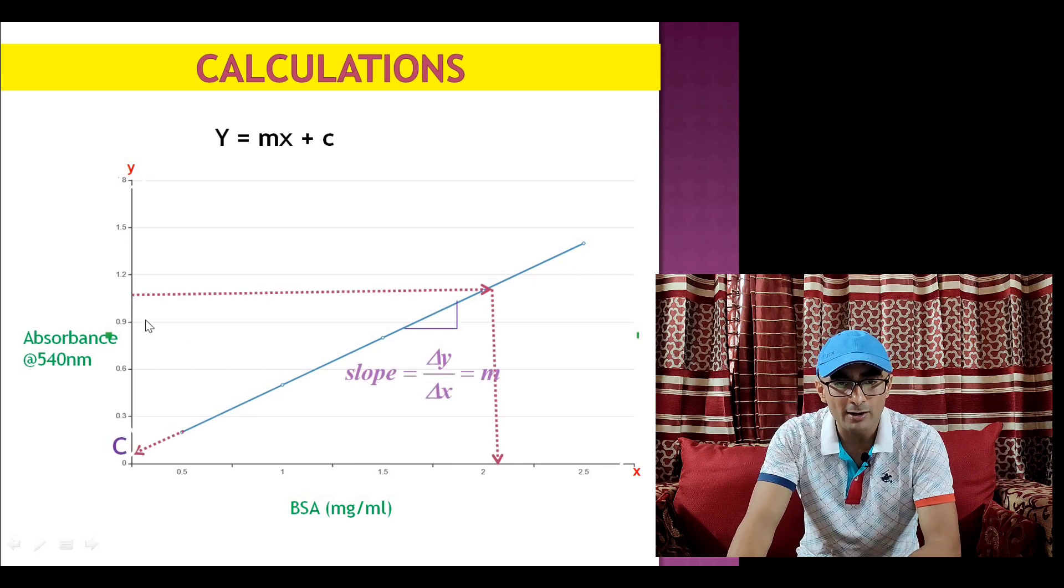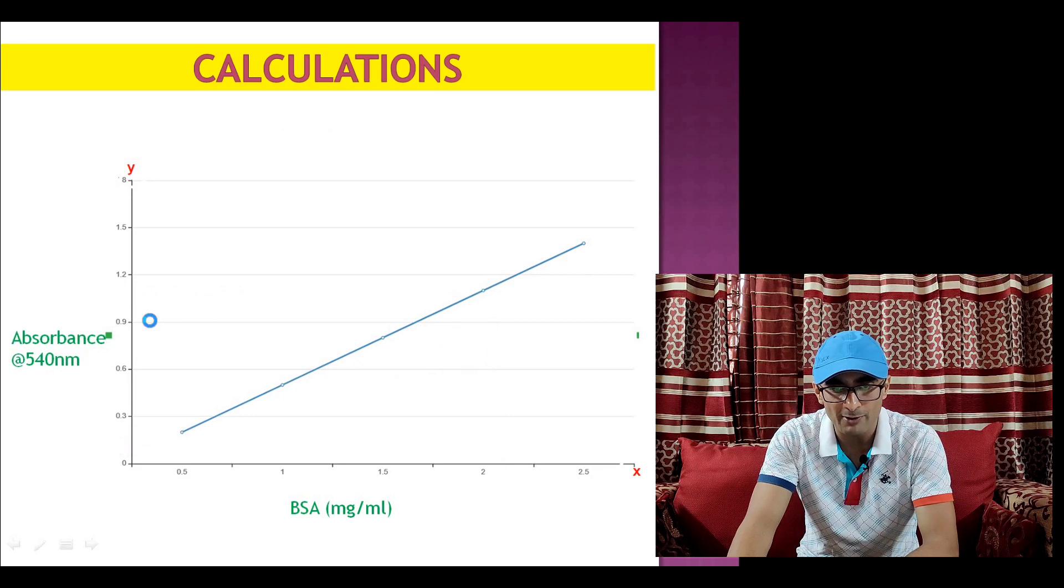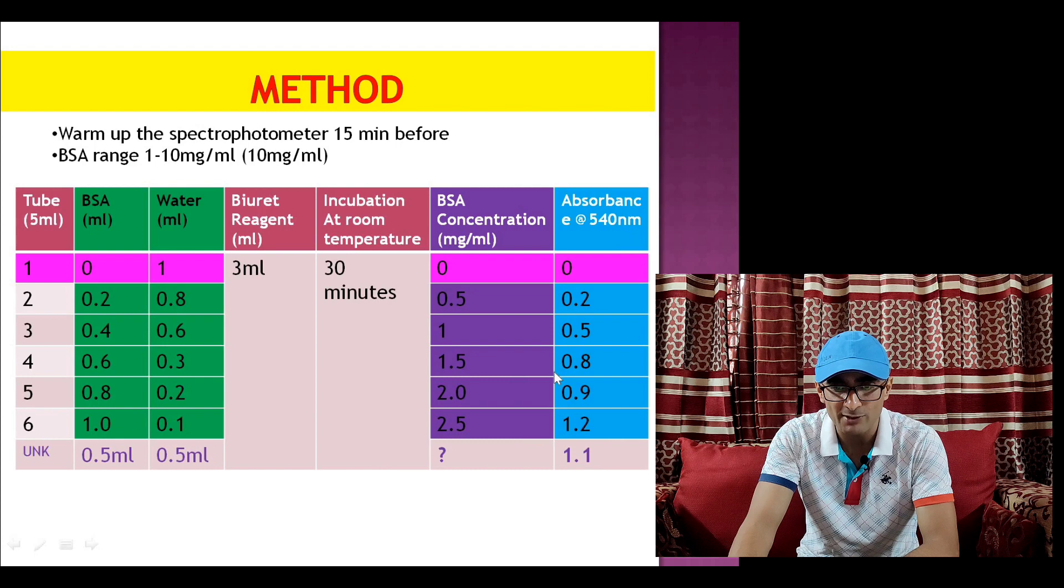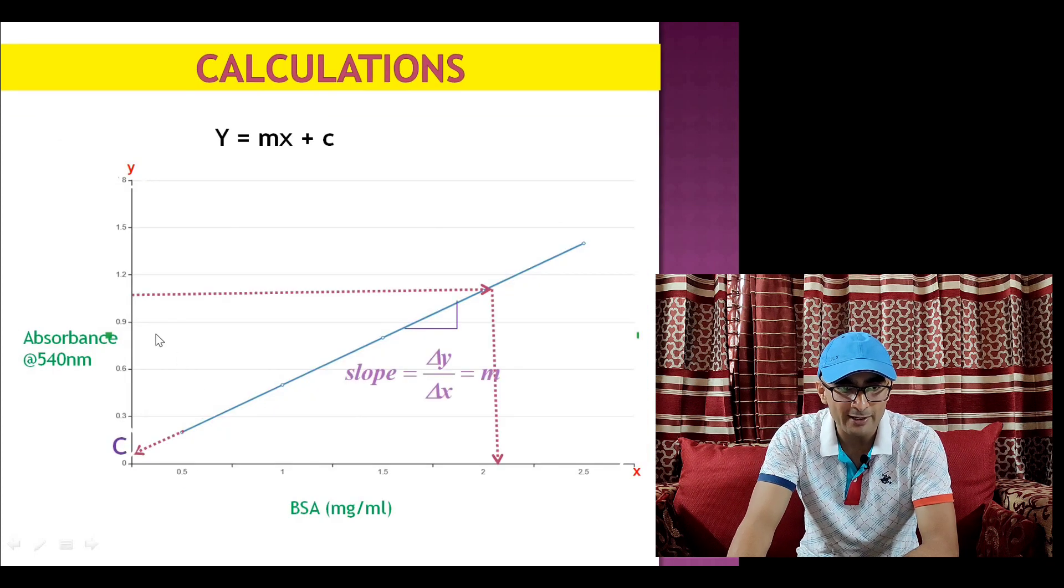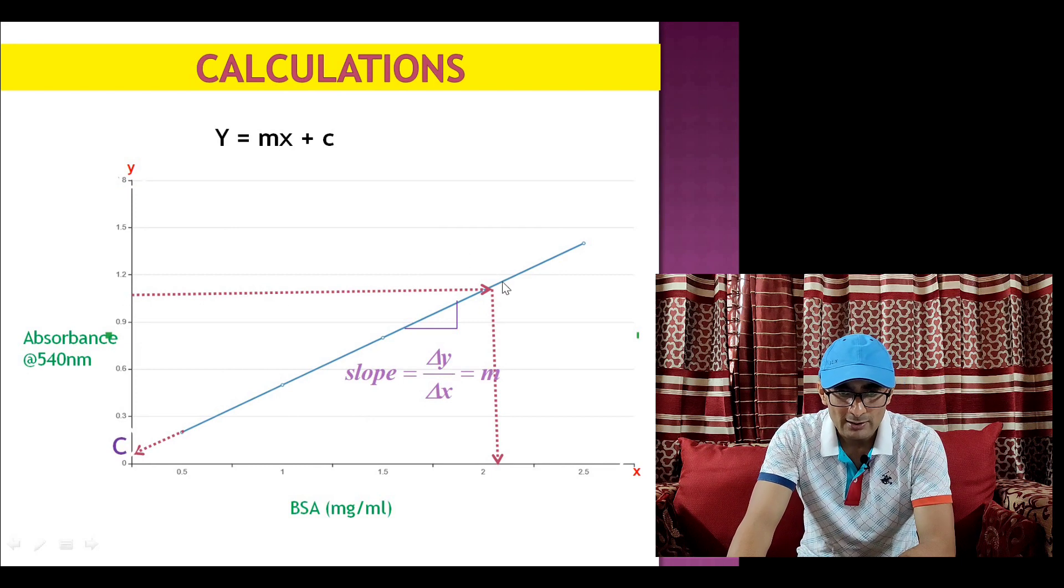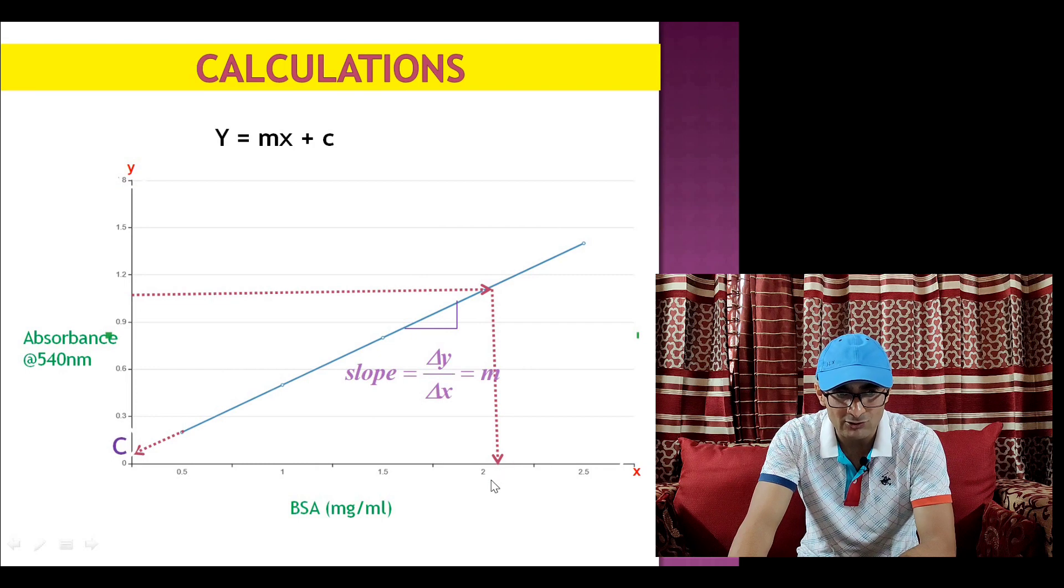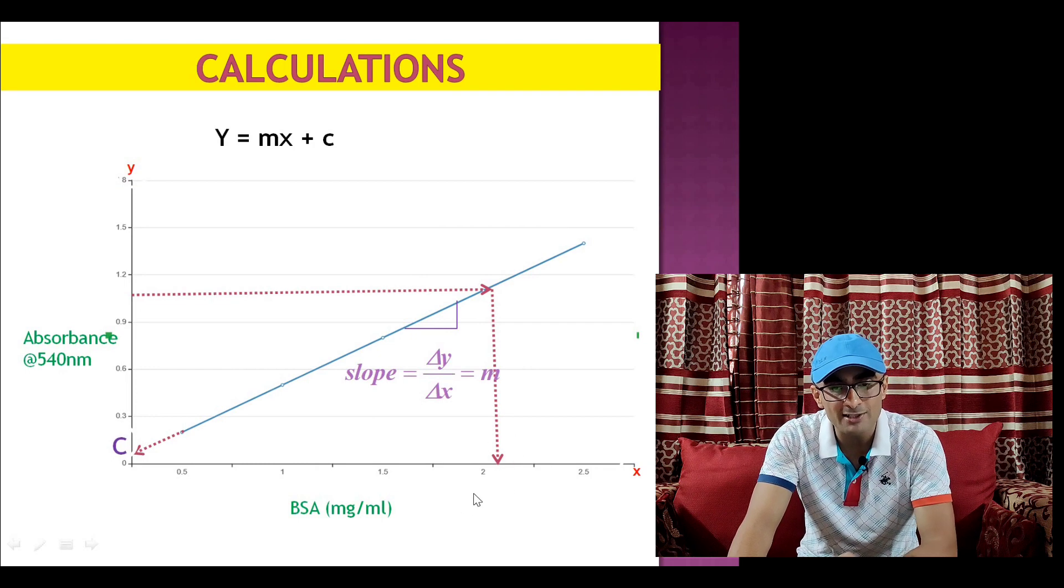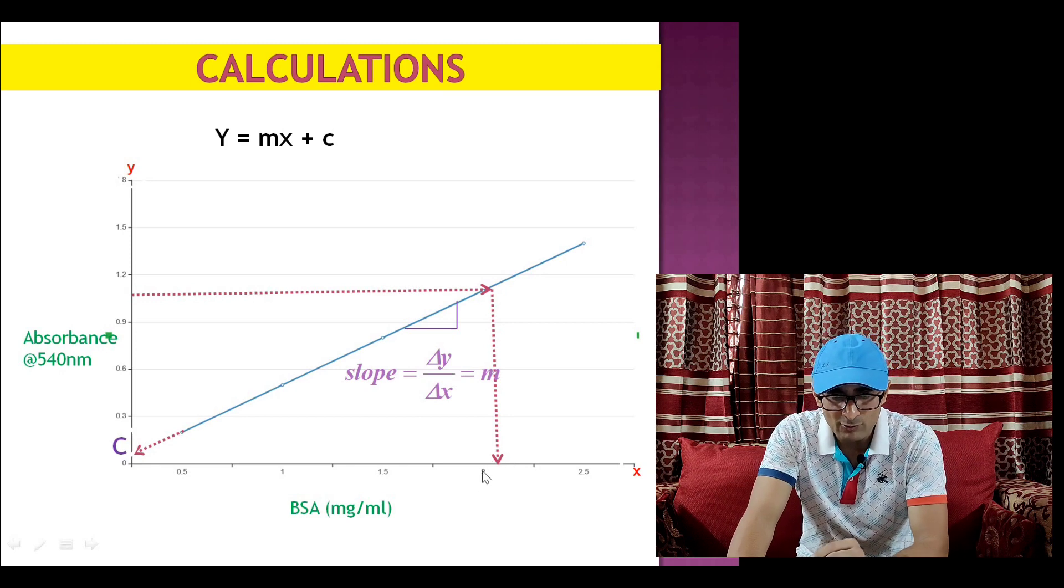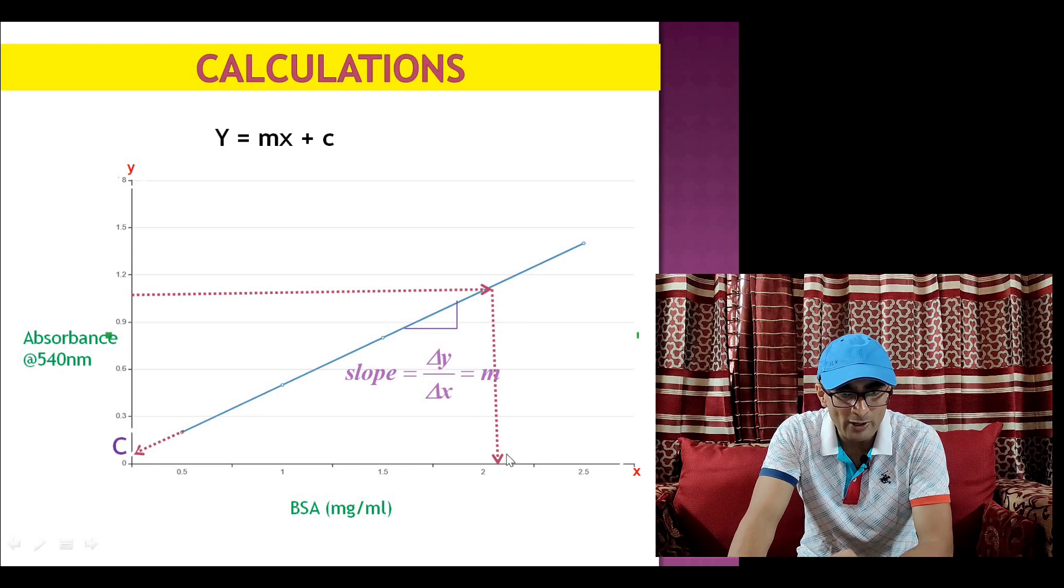Then whatever absorbance of unknown we have got, for example unknown 1.1 absorbance at 540 nanometer, we can calculate 1.1 absorbance at y-axis, it is equivalent to say for example around 2.2 mg per ml protein concentration. It means our sample which is 0.5 ml we have used has a concentration of 2.2 mg per ml.